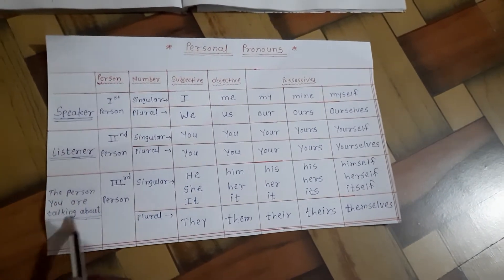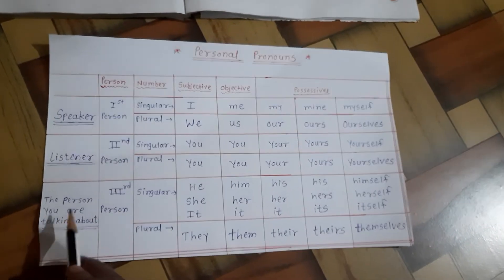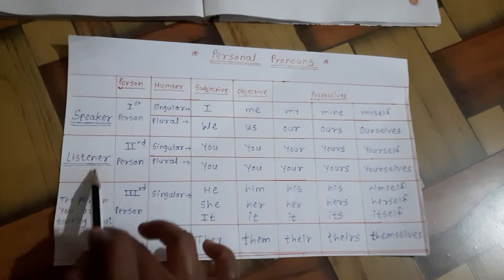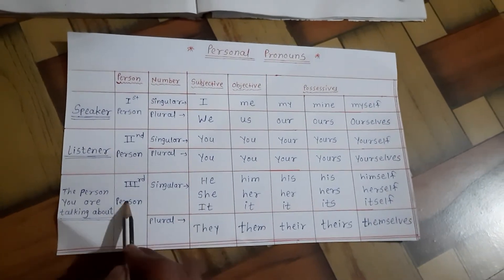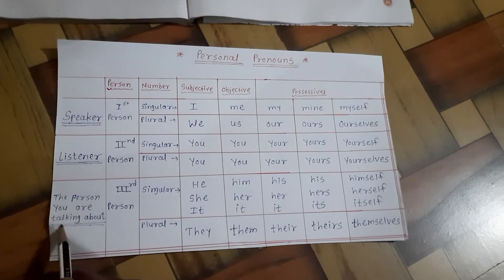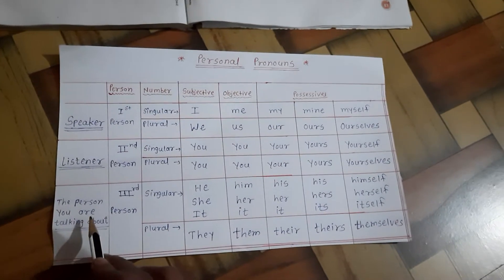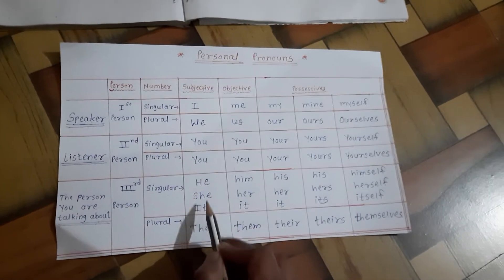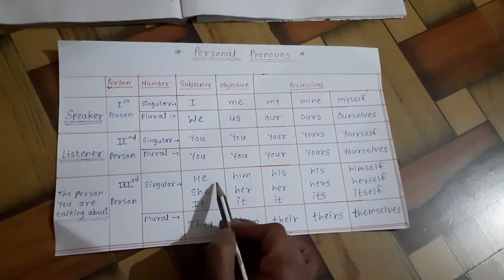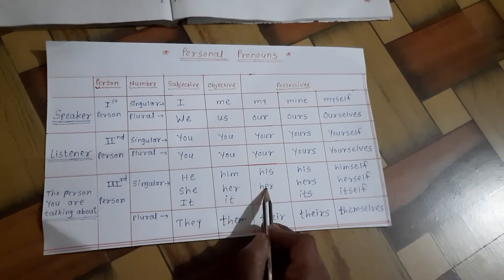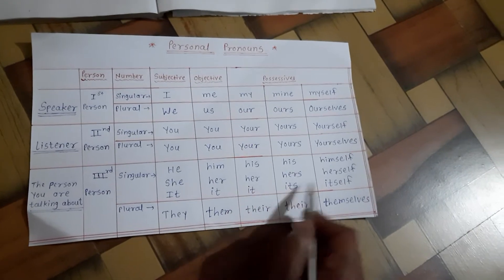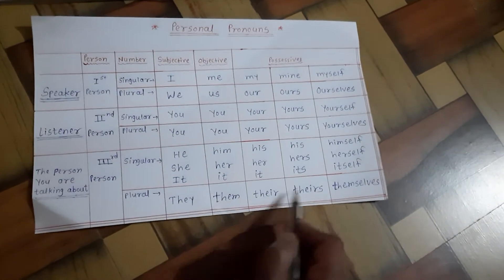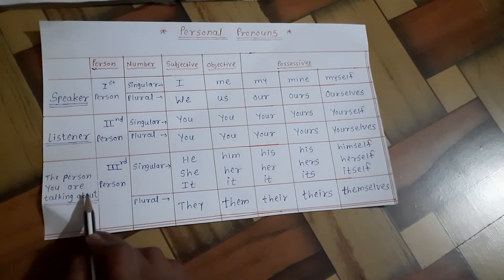For the third person — the person being talked about — when it is a third person we are discussing, singular pronouns used are: he, him, his, himself; she, her, hers, herself; it, its, itself. And plural pronouns are: they, them, their, theirs, themselves.